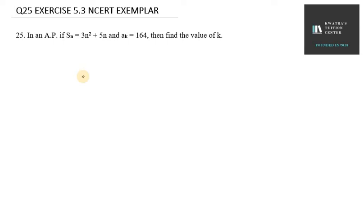Hello everyone, let's start with question number 25. In this, it is given in an AP, if Sn equals 3n squared plus 5n and ak equals 164, then find the value of k.